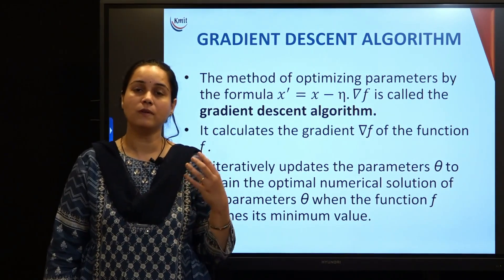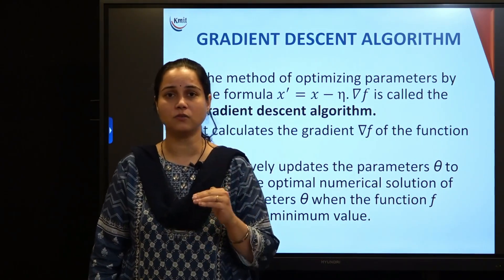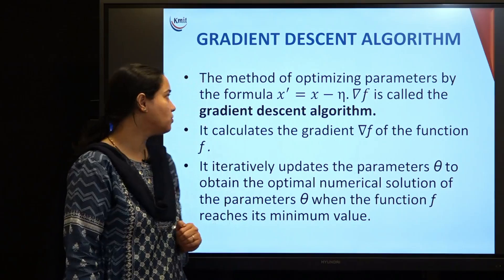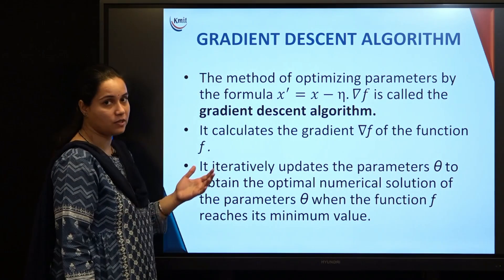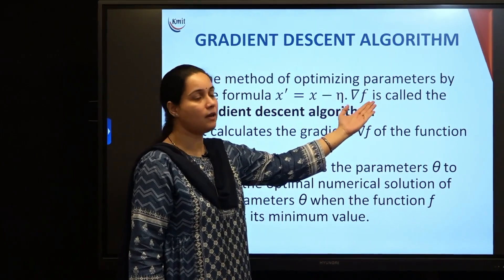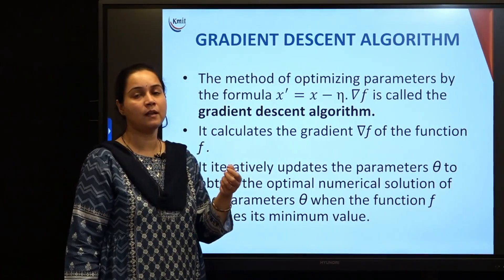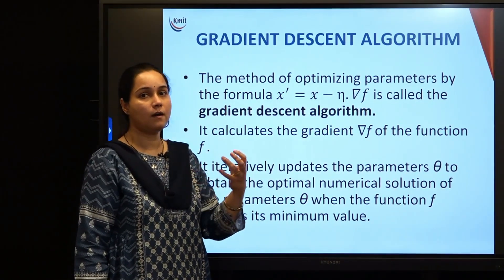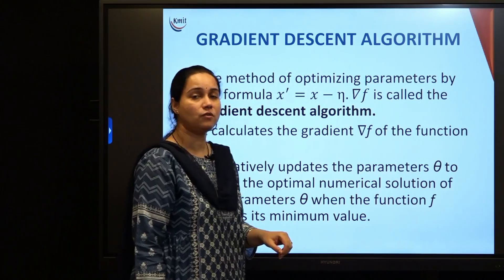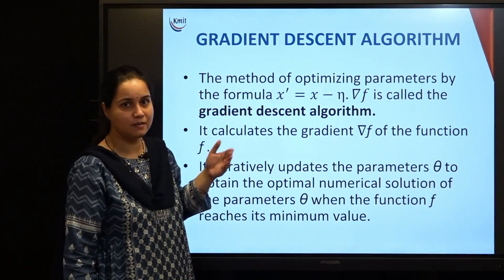Hence the algorithm is named gradient descent. You always want to find the minimum value of your loss function by moving in the direction where the gradient of that loss function with respect to its parameters is reducing. The update formula is: updated parameter x' = previous parameter x minus eta times nabla f, where eta is the learning rate controlling how fast or slow you update your parameters and approach the minima, and nabla f is the gradient of the loss function with respect to the parameters.